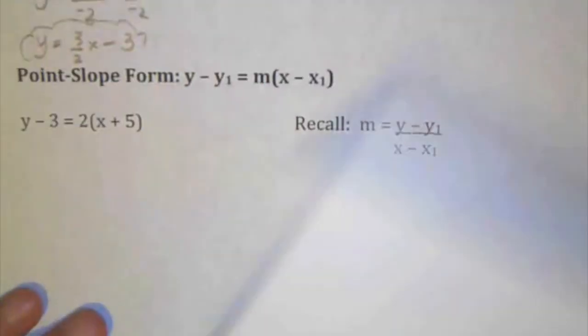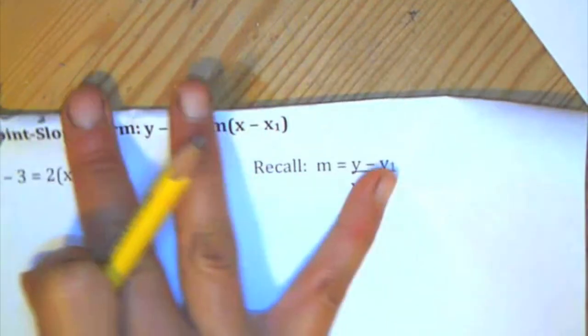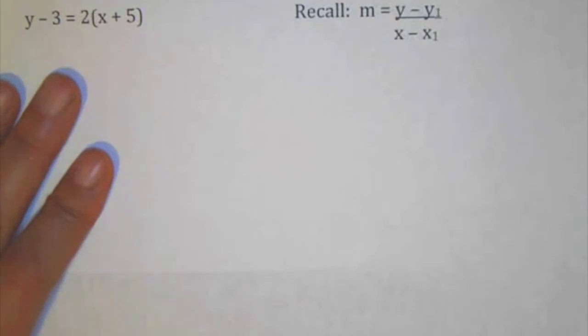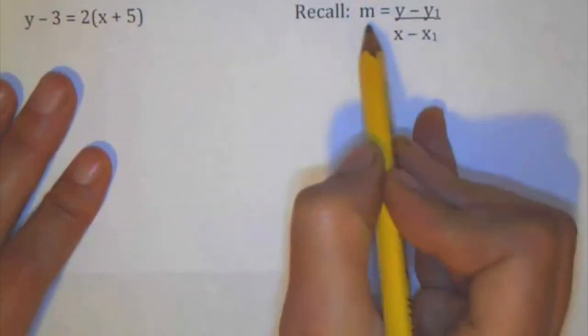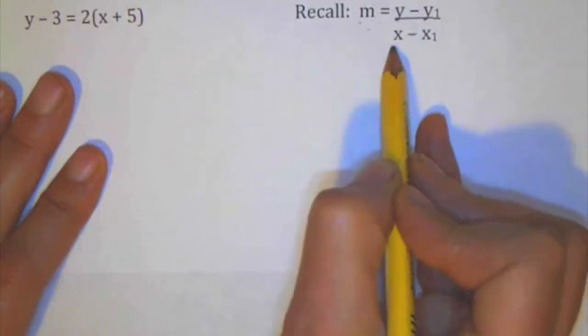Okay, the second problem is a form that we haven't really looked at in class so much. It's called the point-slope form. Okay, point-slope form. And basically, if you recall just the equation for the slope, m equals change in y over change in x.